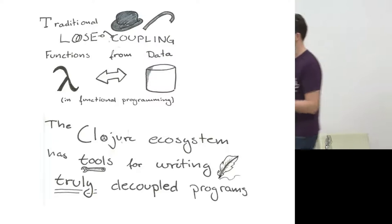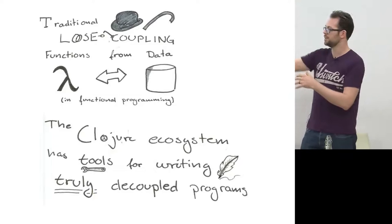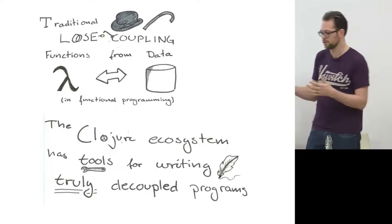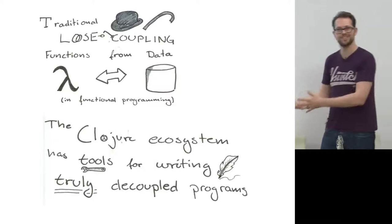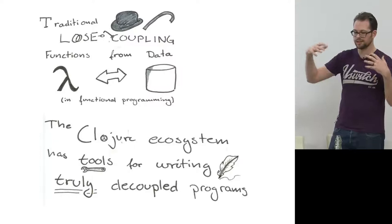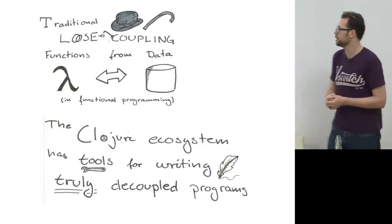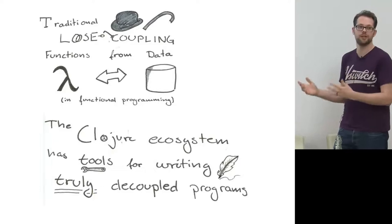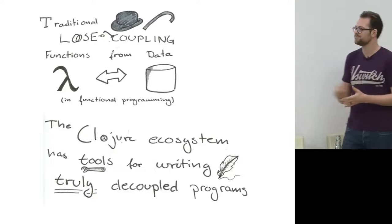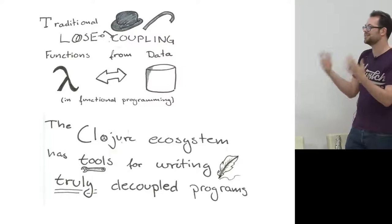Traditionally, when you talk about loose coupling in functional programming circles, you're talking about decoupling functions operating on data from that pure data. This works fairly well for small systems, especially academic ones — that's a perfect model. But once you start building larger, more complex systems, you start needing decoupling on other levels. The Clojure ecosystem has tools for writing truly decoupled programs. Coupling can be good in some cases and bad in others, but here we're looking to decrease coupling and explore tools for doing so.